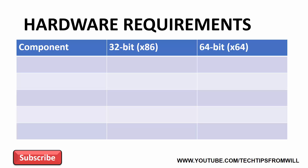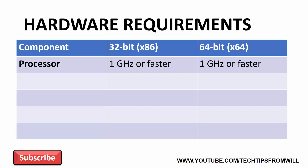So what are the minimum hardware requirements for installing Windows 10? The first is the processor requirement. Windows 10 requires a 1 GHz or faster CPU to operate effectively. Although a 1 GHz processor will run Windows 10, in the real world you should aim for a faster processor if possible. Generally speaking, the faster the processor, the smoother Windows 10 will run.